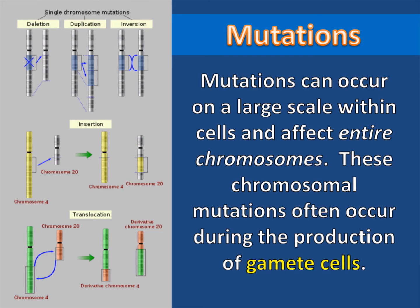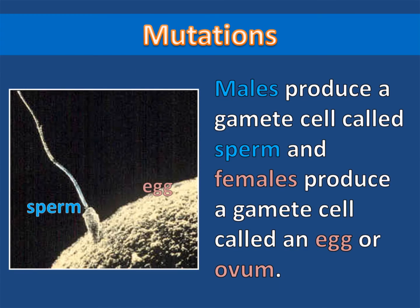Mutations can occur on a large scale within cells and affect entire chromosomes. These chromosomal mutations often occur during the production of gamete cells. Males produce a gamete cell called sperm, and females produce a gamete cell called an egg or ovum.